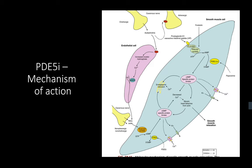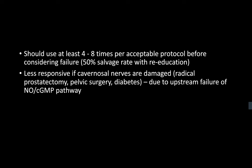We know that many antihypertensives can cause erectile dysfunction. Are there any classes of antihypertensives that will not cause erectile dysfunction or may improve it? These would be angiotensin receptor blockers, calcium channel blockers, and loop diuretics.